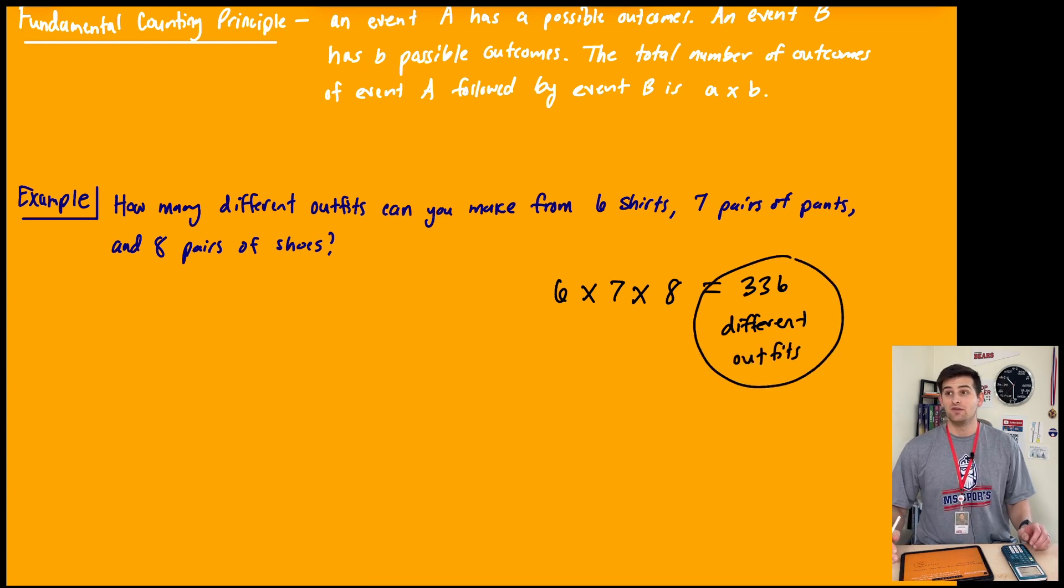So that is us using the fundamental counting principle in order to use a sample space and figure out how many possible outcomes we have.